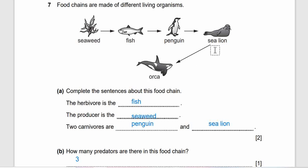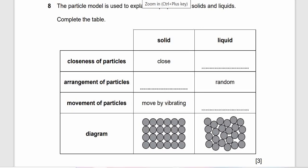Question 7b: How many predators are there in this food chain? What is the definition of predators? Predators are organisms that hunt other animals for food. The answer is three guys, because penguin eats fish, sea lion eats penguin, orca eats sea lions. That's one, two, three.